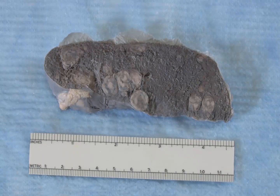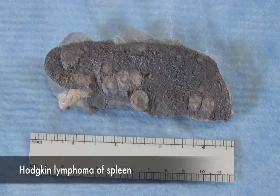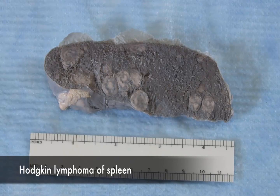Histologically, this tumor is characterized by Reed-Sternberg cells, which are large cells with multiple nuclei or multiple nuclear lobes and a large inclusion-like nucleolus. Low-stage Hodgkin lymphoma has a cure rate of close to 90%.